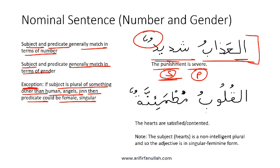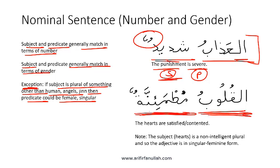Next we have Al Quloobu Mutma'innatun. Here the subject is Quloob, and Quloob is the plural of something that is not intelligent. Al Quloob means 'the hearts.' Since this is the plural of something that's not intelligent, the predicate needs to be female singular, and that's exactly what we have. The translation of this sentence is 'the hearts are satisfied' or 'the hearts are contented.' The subject, Quloob or hearts, is non-intelligent and plural, so the predicate is singular feminine.